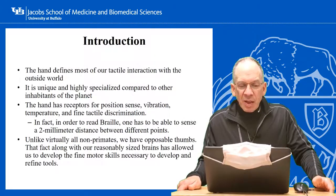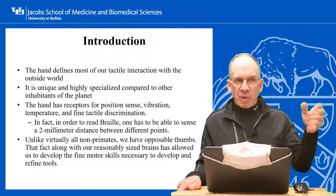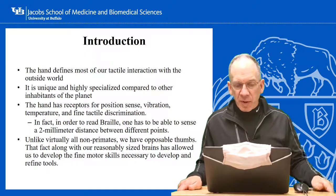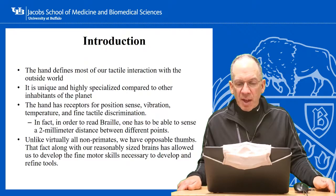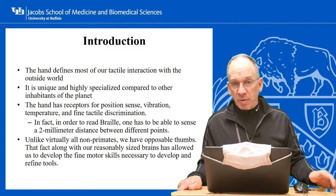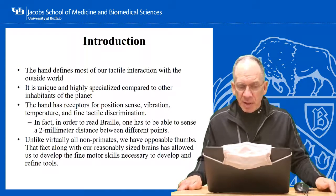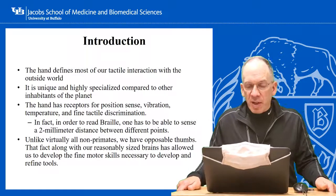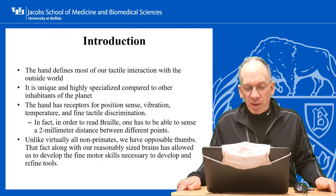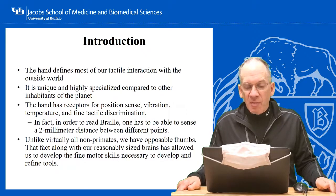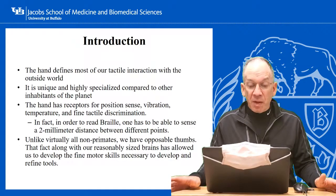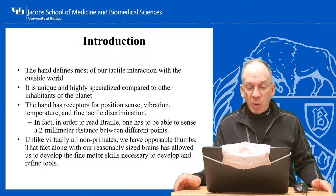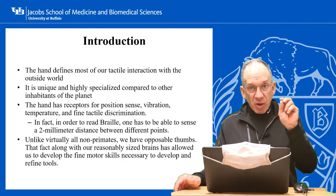The hand is really an amazing organism — it defines most of our tactile interaction with the outside world. It's uniquely specialized compared to all other inhabitants of the planet. It has multiple different types of nerve receptors for position sense, vibration, temperature, and fine tactile discrimination. In fact, in order to read Braille you have to be able to sense points that are two millimeters apart.